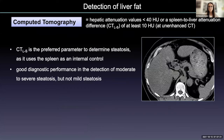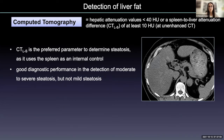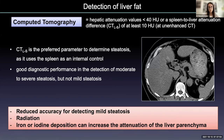What about CT? On CT, we recognize liver steatosis when the hepatic attenuation values are below 40 Hounsfield units, or a spleen-to-liver attenuation difference of at least 10 Hounsfield units. CT has good diagnostic performance in the detection of moderate to severe steatosis, but not for mild steatosis. Besides radiation issues, the presence of iron or iodine deposition can increase the attenuation of the liver parenchyma, reducing accuracy for fat detection.